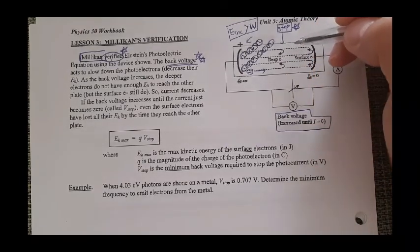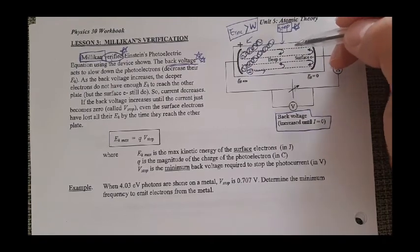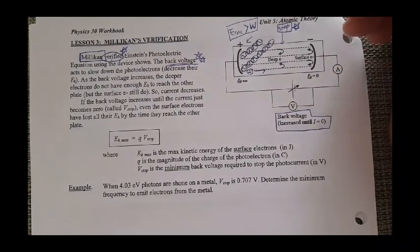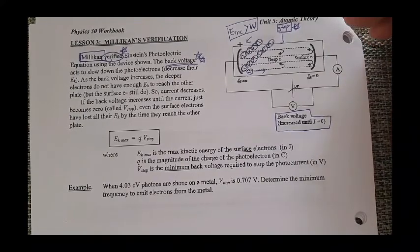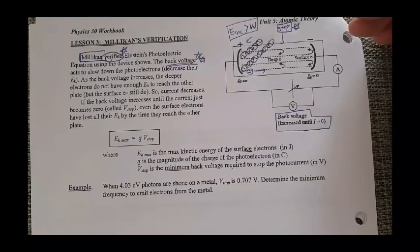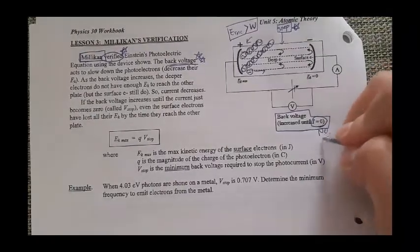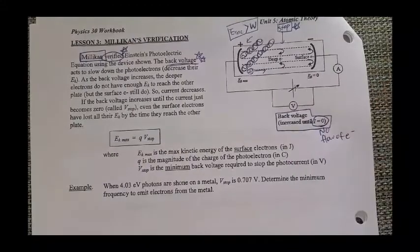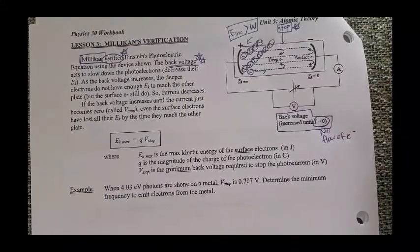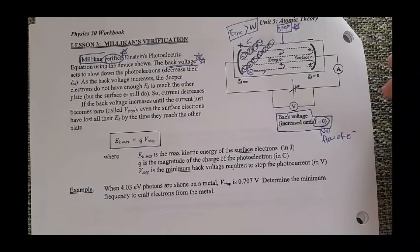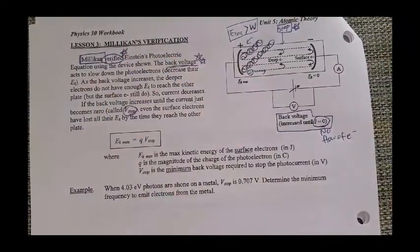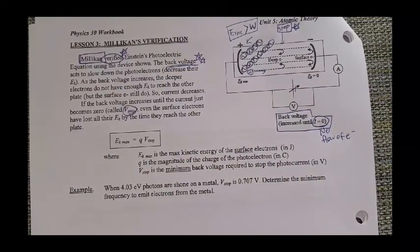In this situation, current will be decreased. As current decreases, the back voltage eventually reached to the point where current I value is equal to zero. Because you don't have a flow. So imagine q over t, q is zero, something like that. And we call that specific number as stopping voltage. Even if the surface electron have lost all their kinetic energy by the time they reach to the other plate, you may notice that at this point, current is zero.